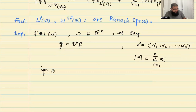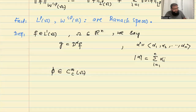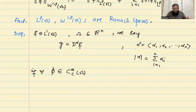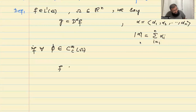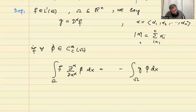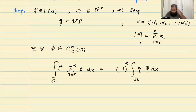For all phi in C-infinity with compact support — these are test functions, smooth functions that are zero at the boundary and beyond with compact support — we take F and the alpha-th derivatives of phi and integrate over omega. Then we get (-1)^|alpha| times the integral of G times phi over omega. This is because we integrate by parts alpha times, and this is how we define the alpha-th order weak derivative.